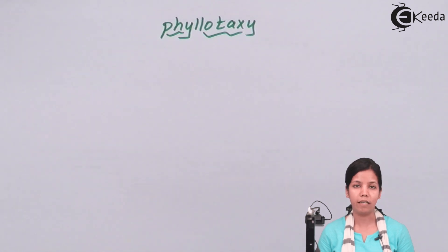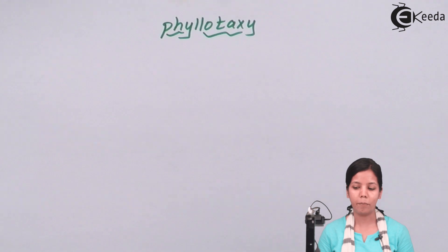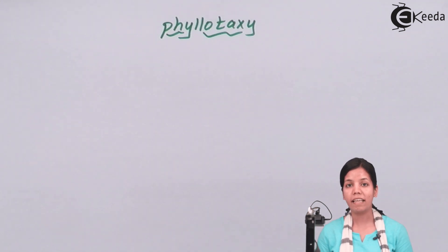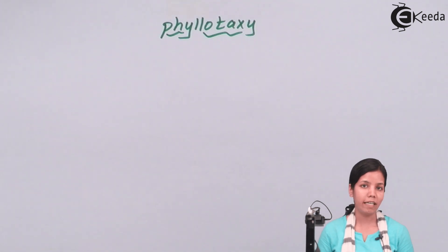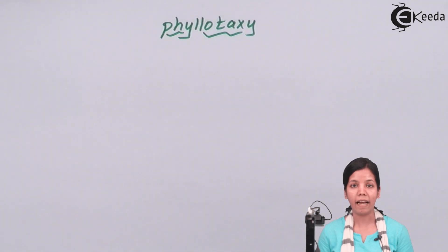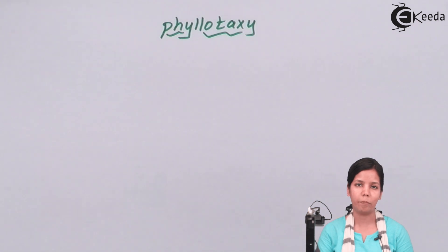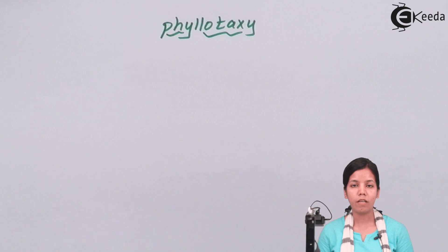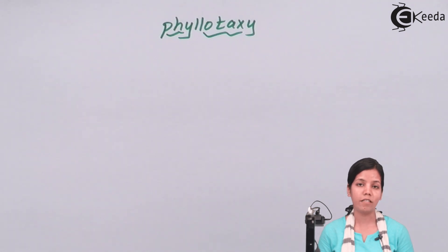Phyllotaxy could be opposite, verticillate, or alternate. In alternate Phyllotaxy, there is a single leaf present at each node. In verticillate Phyllotaxy, more than two leaves are present at each node, and these leaves form a whorl-like or flower-like structure. In opposite Phyllotaxy, two leaves are present at each node and these two leaves are opposite to each other.